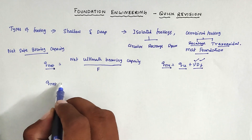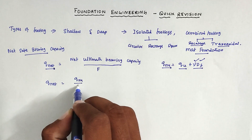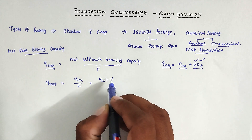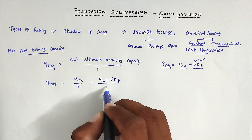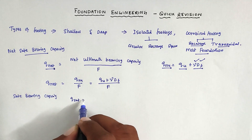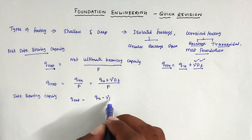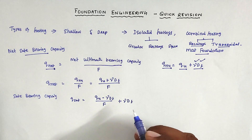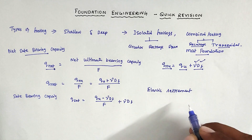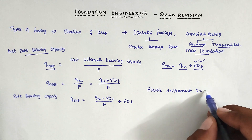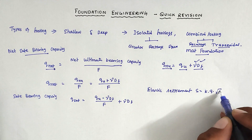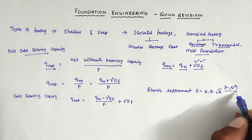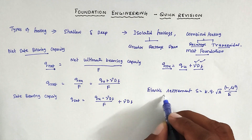So Q_net = Q_NU / F. Substituting: Q_safe = (Q_U − gamma × D_F) / F + gamma × D_F. This gives the safe bearing capacity. The elastic settlement formula is: S = K × Q × √A × (1 − μ²) / E, where K is a constant, Q is load intensity, A is area, μ is Poisson's ratio, and E is the modulus of elasticity.